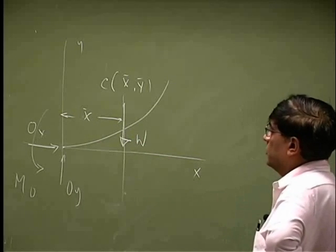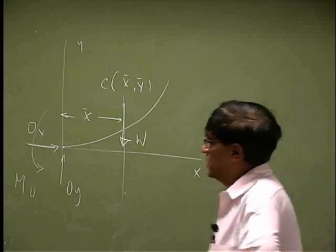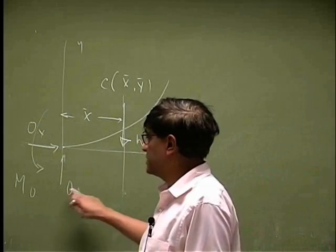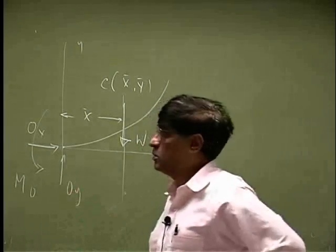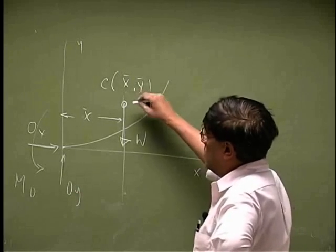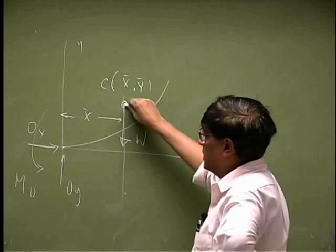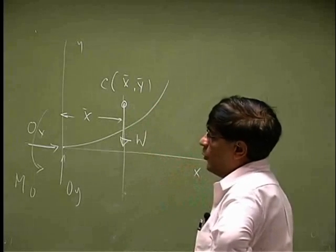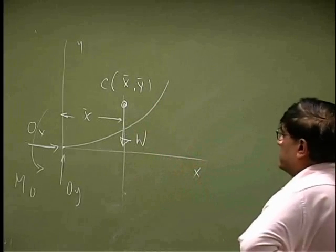So your free body is really these three reactions: Ox, Oy, and O, and the point C which is the center of gravity where you have the weight of the object coming down.